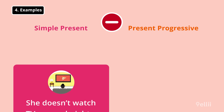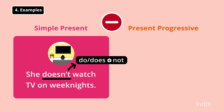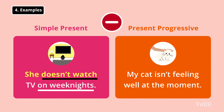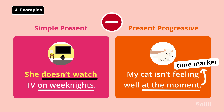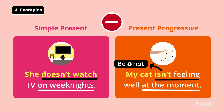Moving on to negative sentences: She doesn't watch TV on weeknights. To form a negative simple present sentence, we need the auxiliary verb do or does and the adverb not. Since the subject is she, we need doesn't or does not, with the main verb watch. My cat isn't feeling well at the moment. The time marker at the moment means we need a present progressive verb. When the subject is my cat, the negative form of be becomes isn't or is not. The ing form of feel is feeling.